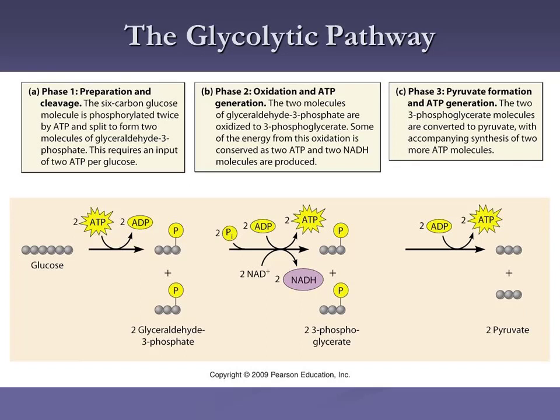We take glucose and break it down. In the preparation step, we're using energy — taking a phosphate off of each ATP molecule and sticking it onto two three-carbon molecules. That's the cleavage part: breaking it down from a six-carbon into two three-carbon molecules called glyceraldehyde-3-phosphate. That's phase one.